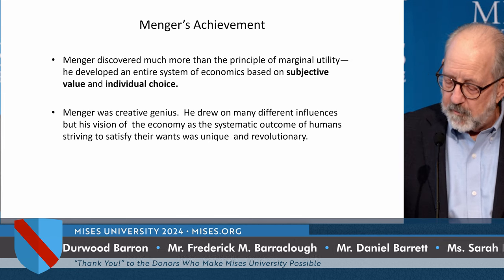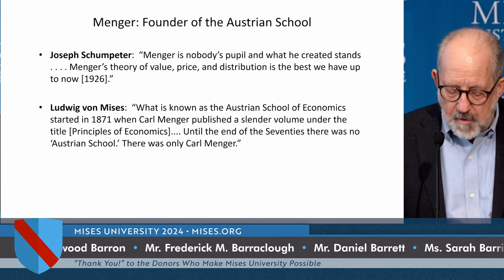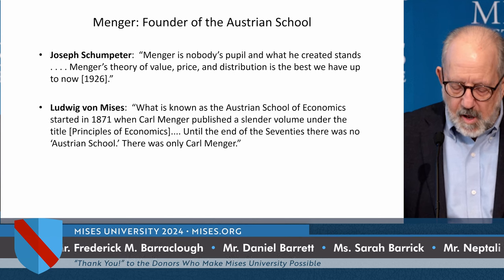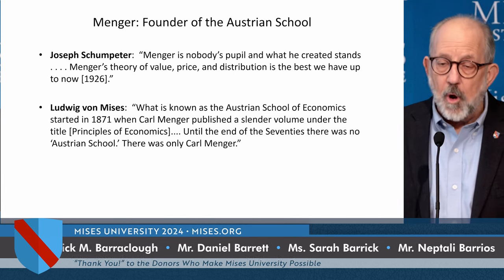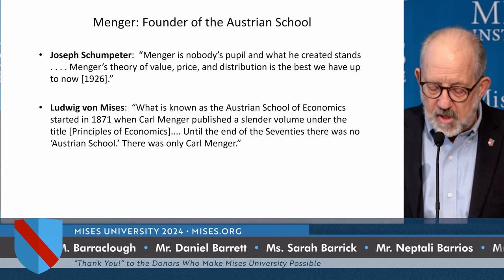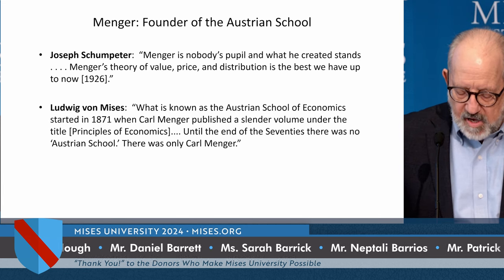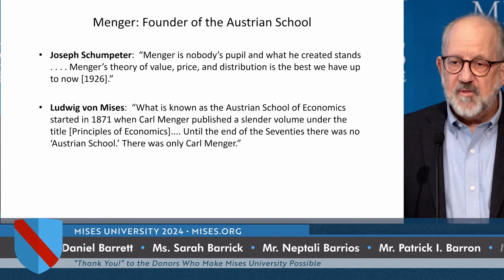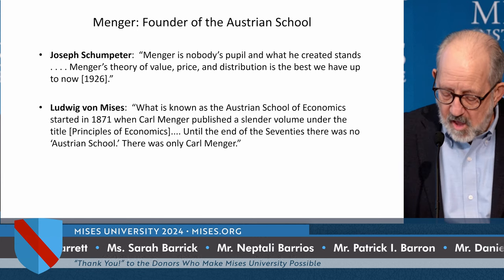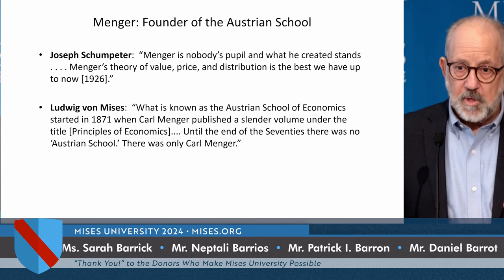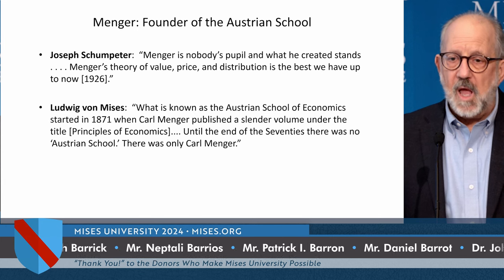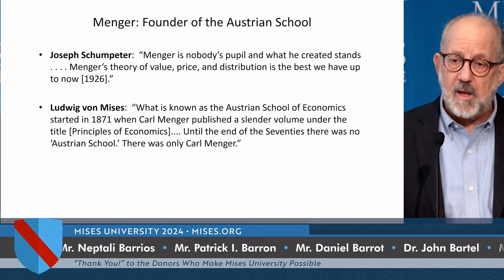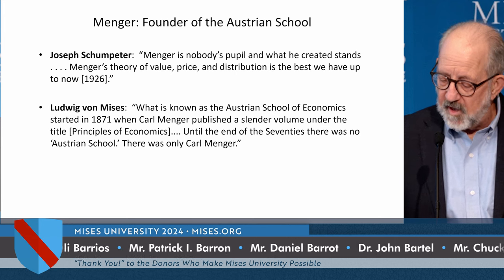Ludwig von Mises said: 'What is known as the Austrian School of Economics started in 1871 when Karl Menger published a slender volume under the title Principles of Economics. Until the end of the 1870s, there was no Austrian School — there was only Karl Menger.' So all the fundamental ideas of the Austrian School can be traced back to Karl Menger.